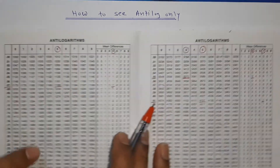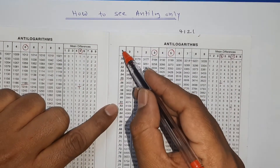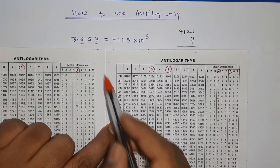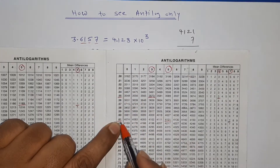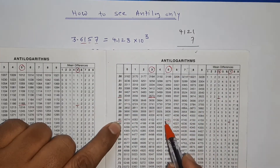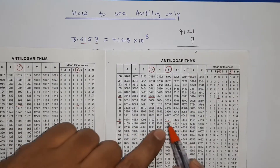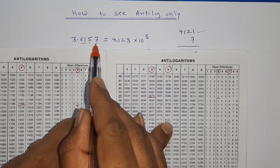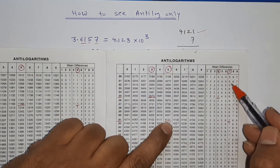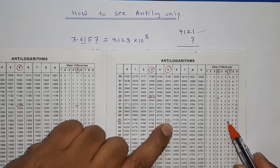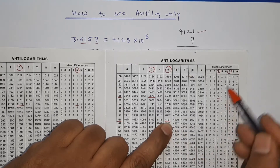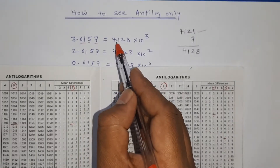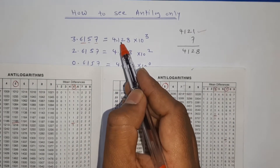For example, with 0.6157: the first two digits are 61, the third digit is 5, so in row 61 under column 5 we get 4121. The fourth digit is 7, so we look up mean difference 7, which gives us 7. Adding that, we get 4121 + 7 = 4128.